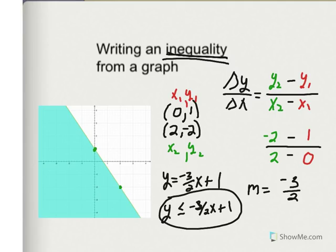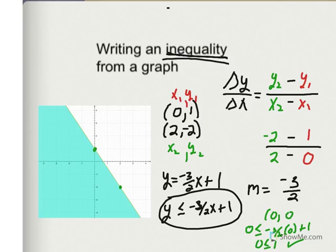But I want to check this just to make sure I'm right. It looks like I have (0, 0) in the shaded region. So I'm going to check to see if (0, 0) is a solution to my linear inequality. And I can see that it is — 0 is less than or equal to 1, and that's what I get after I plug in (0, 0).